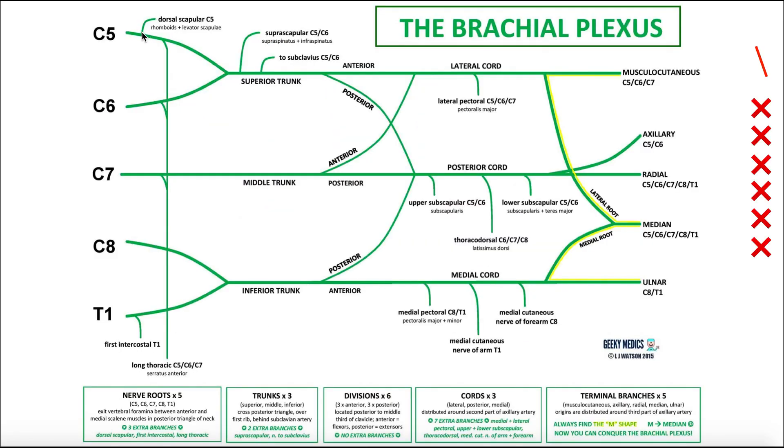So here's the brachial plexus, and look here. This is the dorsal scapular nerve. Notice that this nerve innervates the rhomboids, major and minor, and the levator scapulae, and that it comes directly off of the C5 nerve root of the brachial plexus. If there was a C5 radiculopathy, this nerve would be affected, because it comes directly off of that nerve root.